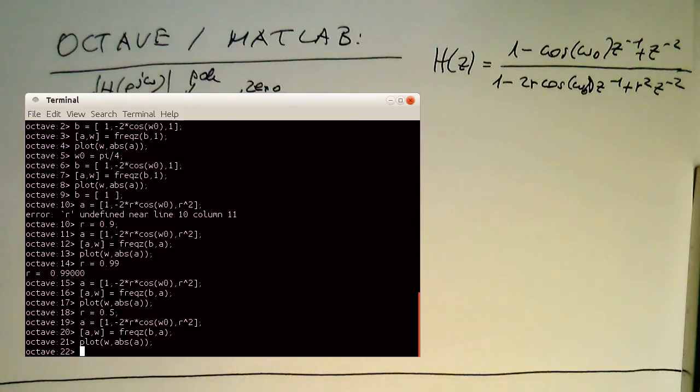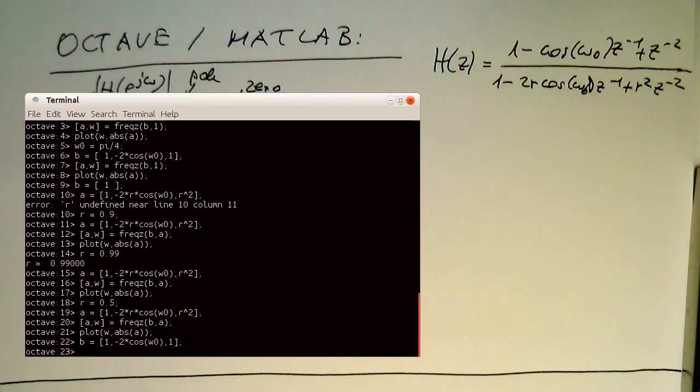So that's our transfer function here just to have it here sitting in the corner. And now we need to populate our A's and B's here. And so the B are our FIR coefficients here. So that's 1 and then minus 2 times cos omega zero. And then the next term is 1, so that's our B term.